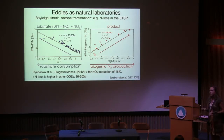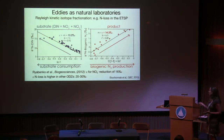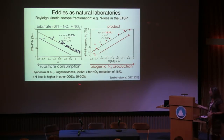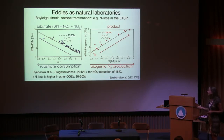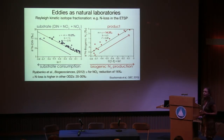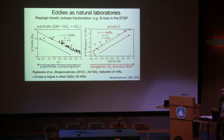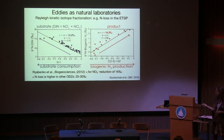Different nitrogen processes have different isotope effects. We obtained an isotope effect of about 13 to 14 per mil, which is relatively low compared to the isotope effect reported for other ODZs of 20 to 30 per mil. However, it is comparable to the isotope effect for nitrate reduction calculated by Ryabenko et al. in the same Eastern Tropical South Pacific off Peru — which was 16 per mil — measured outside the eddy.